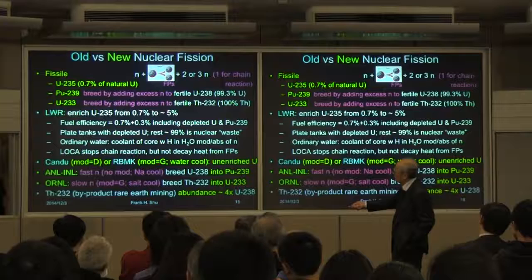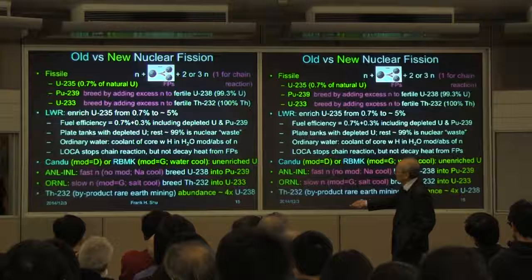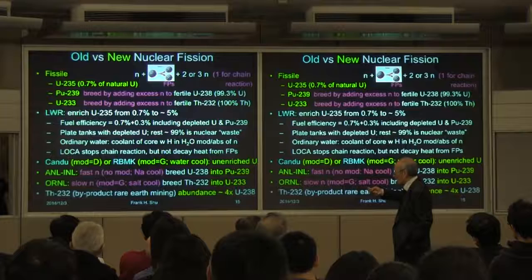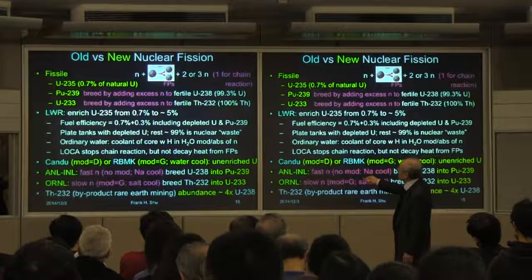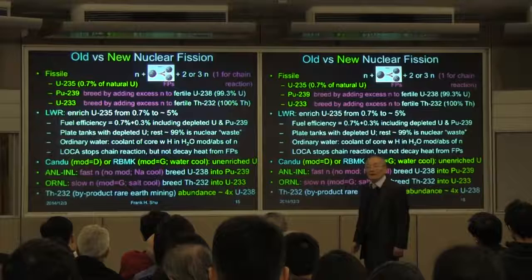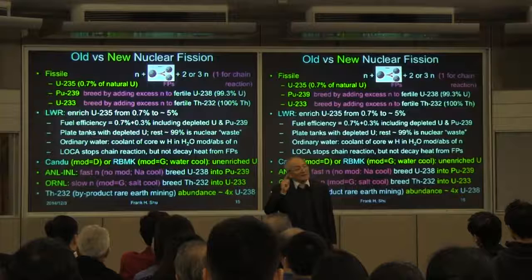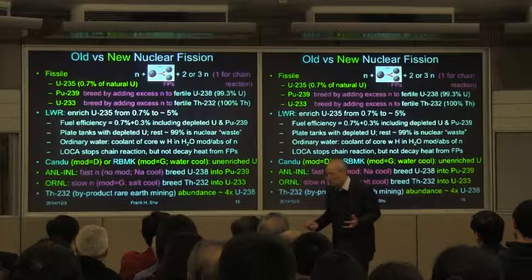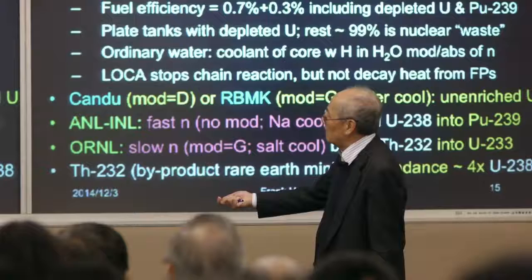For breeding reactors there are basically two in contention. One was pushed forward by Argonne National Lab — now continued at Idaho National Lab — where you don't moderate; you use fast neutrons. If you don't moderate you need much more fuel to go critical, but it's much easier to breed plutonium. For coolant, to avoid absorbing neutrons, you can use liquid sodium. But if you know any chemistry, liquid sodium is tricky: it touches air, it's on fire; it touches water, you have an explosion. It's not impossible, and people are still attempting this route, but it's not easy.